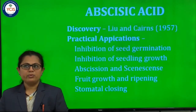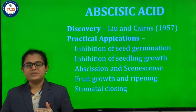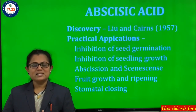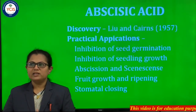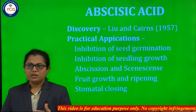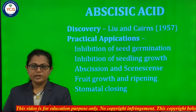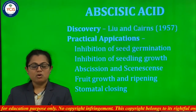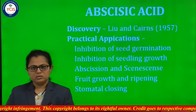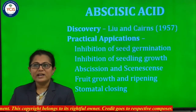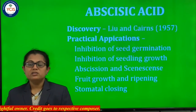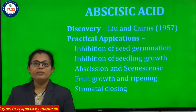The next phytohormone is abscisic acid. Abscisic acid is called the inhibitor of growth. Abscisic acid was discovered by Lee and Queens in 1957. Looking at the various applications of abscisic acid: it inhibits seed germination. The other phytohormones — auxin, gibberellins, cytokinin — promote seed germination. But abscisic acid, that is ABA, inhibits seed germination. So it is also called the inhibitor of growth.